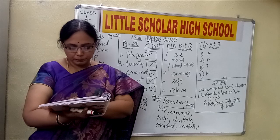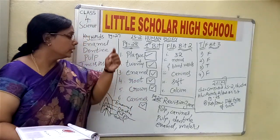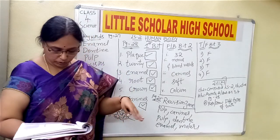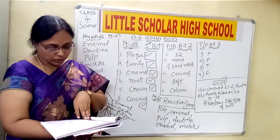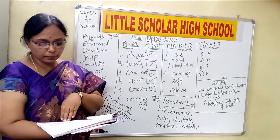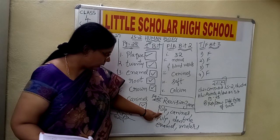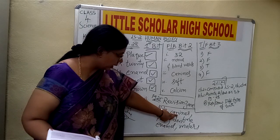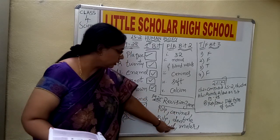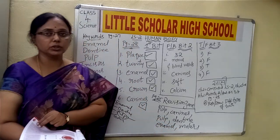Teeth that are at the back of the mouth — the order is incisors, canines, premolars and molars. So the teeth that are at the back of the mouth are the molars. So the answers are: pulp, canines, pulp again, dentine, enamel, and molars. Please mention all the answers in your textbook.